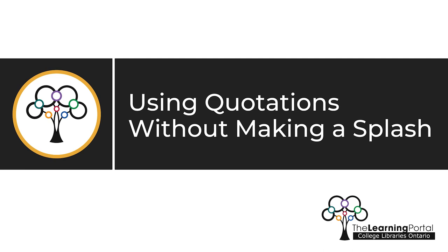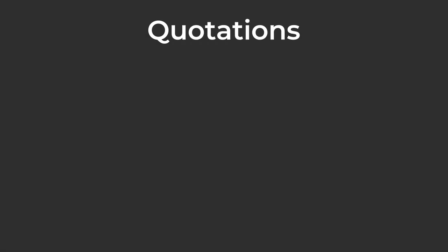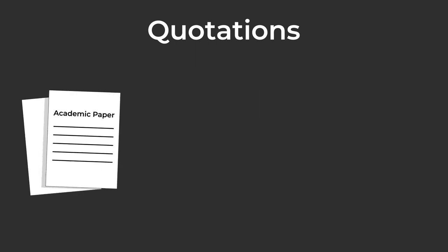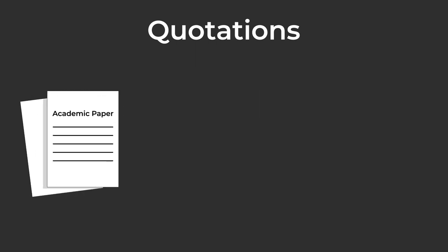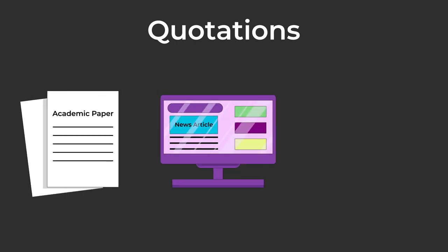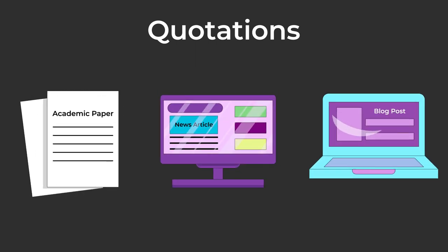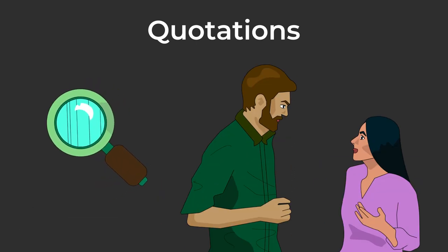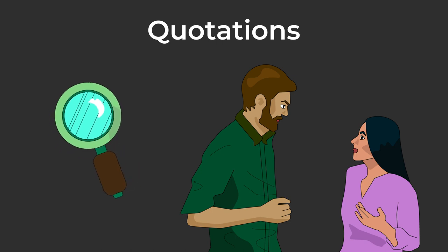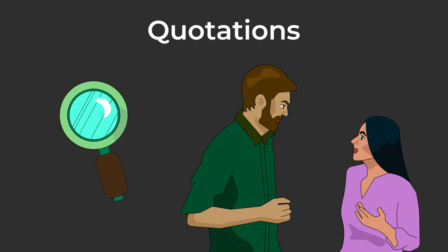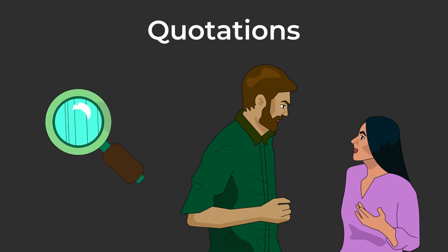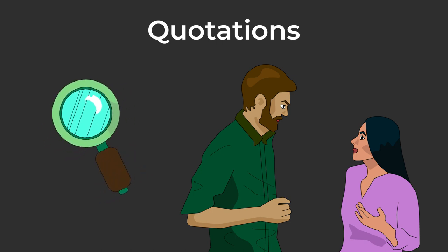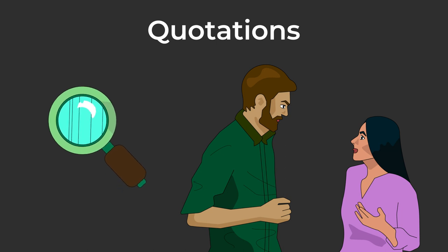Using quotations without making a splash. Quotations are important elements of an academic paper, but they can be used in all sorts of writing, such as news articles and blog posts. With a quotation, you can provide evidence of what you are claiming or comments from people to back up your point. This video will explain how to use quotations correctly using examples of different types of writing.